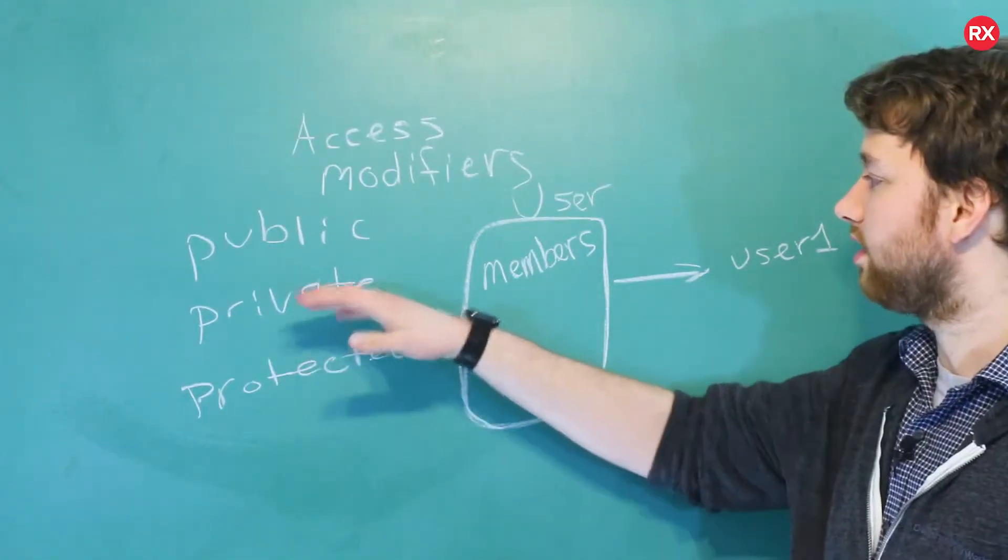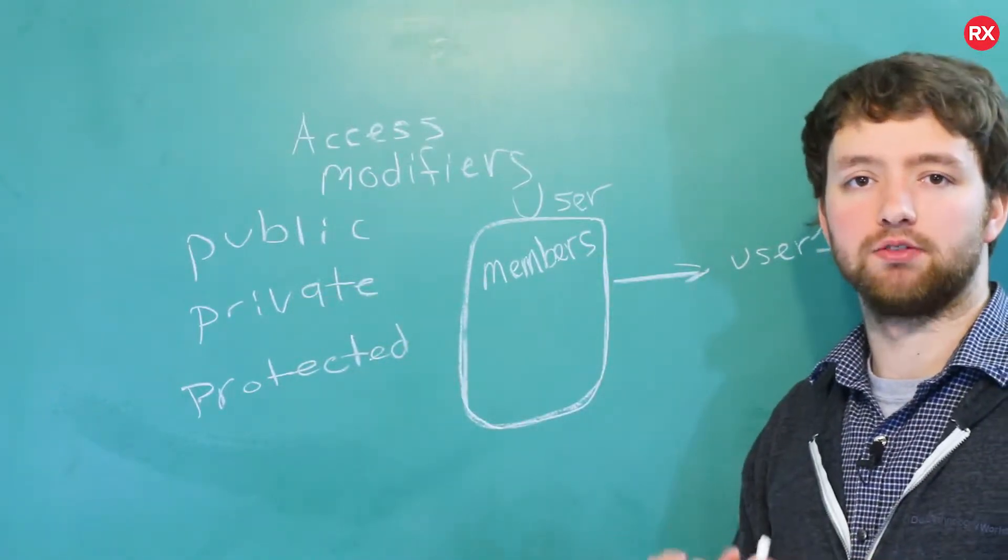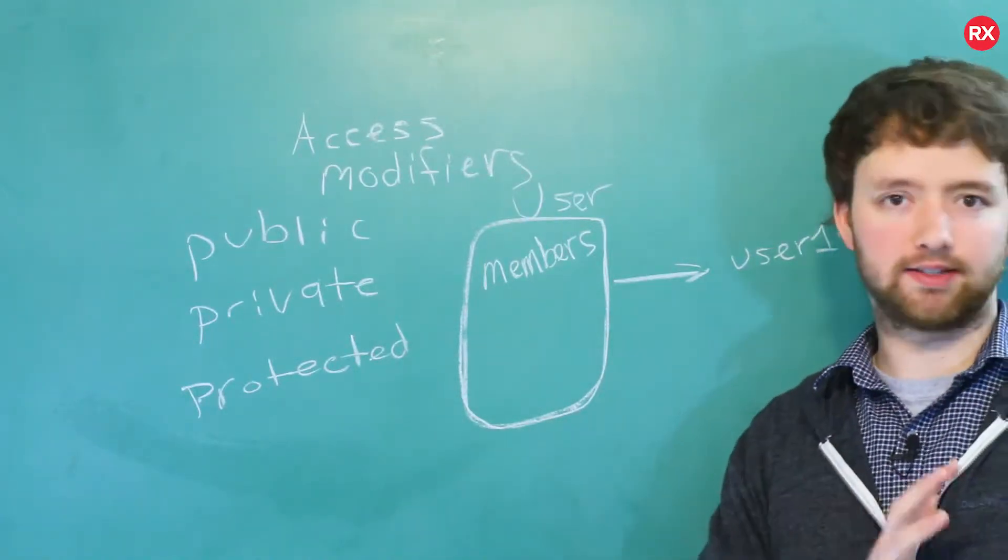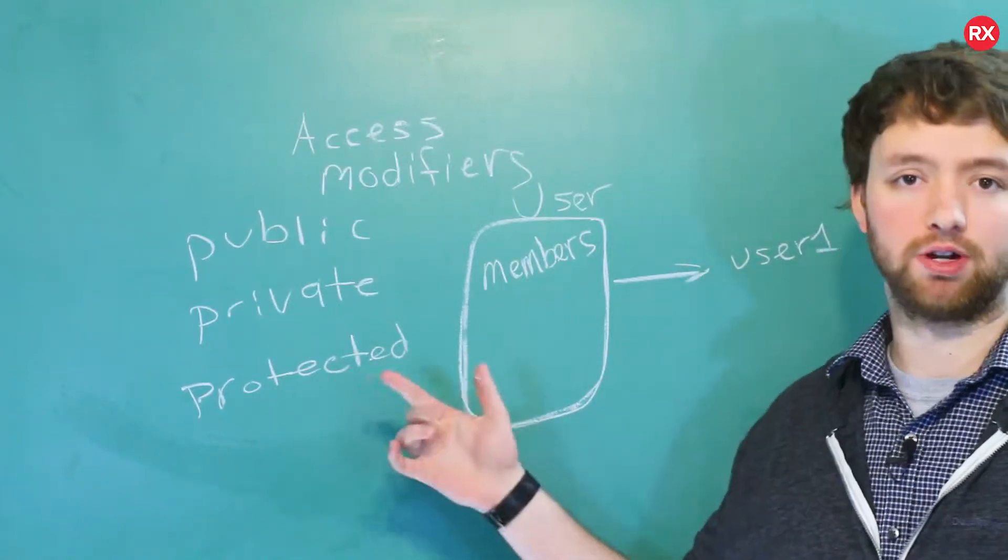Protected is very similar to private, but it will extend down to any class or structure that inherits from it. So again, that's not going to make a whole lot of sense until we talk about inheritance, but protected will come up in the future.